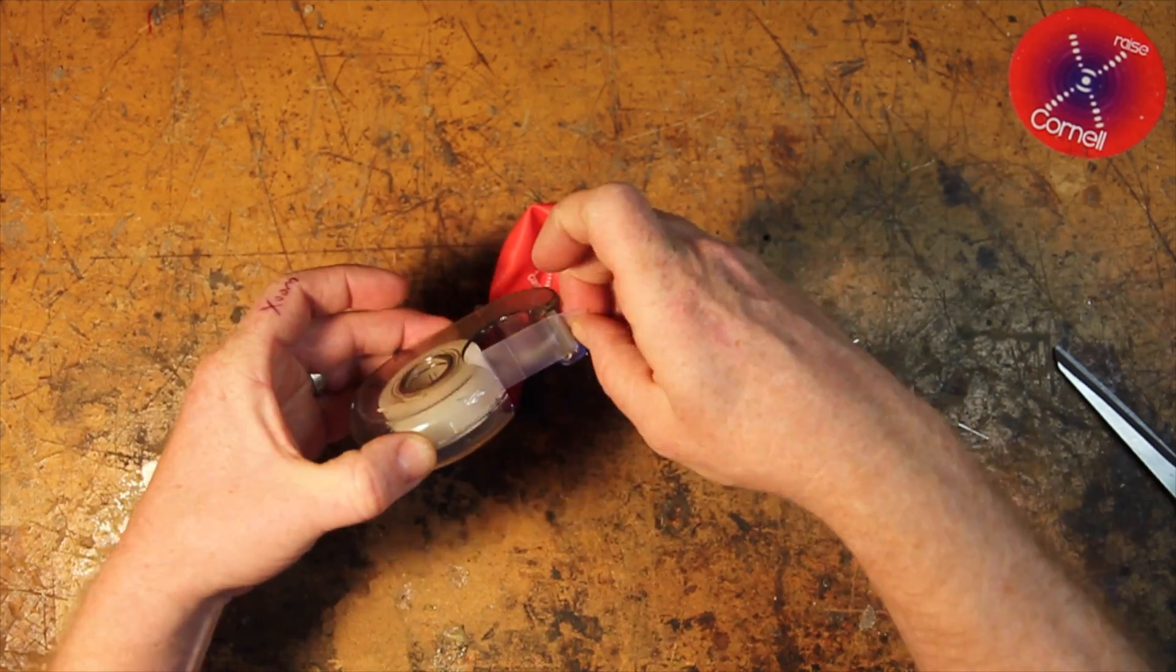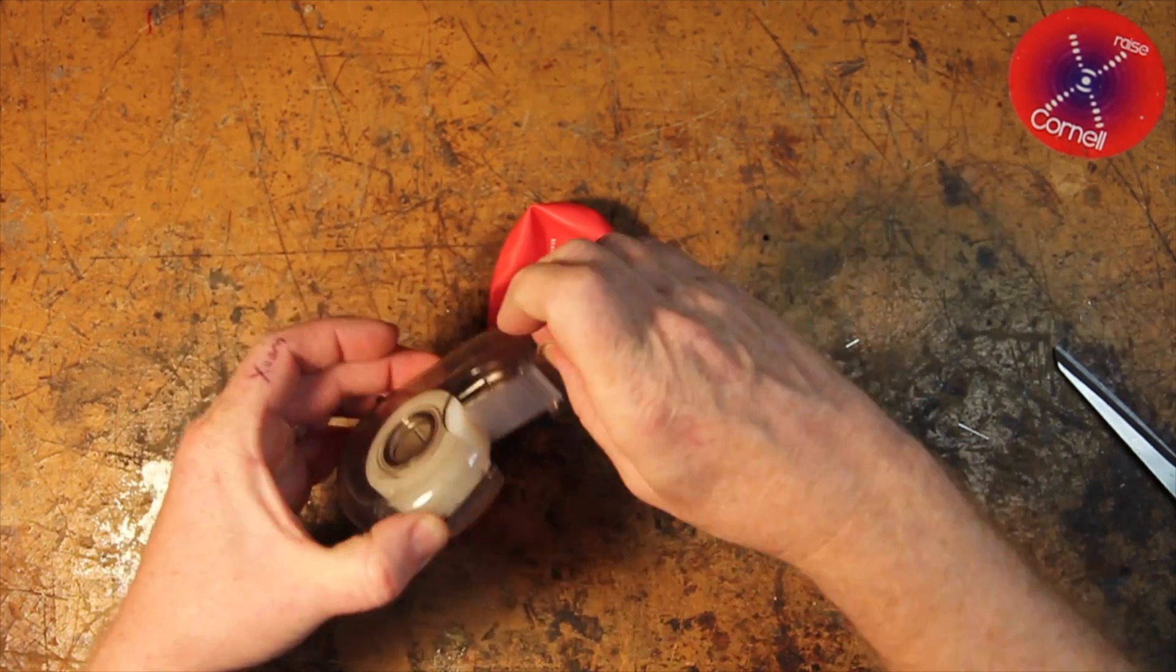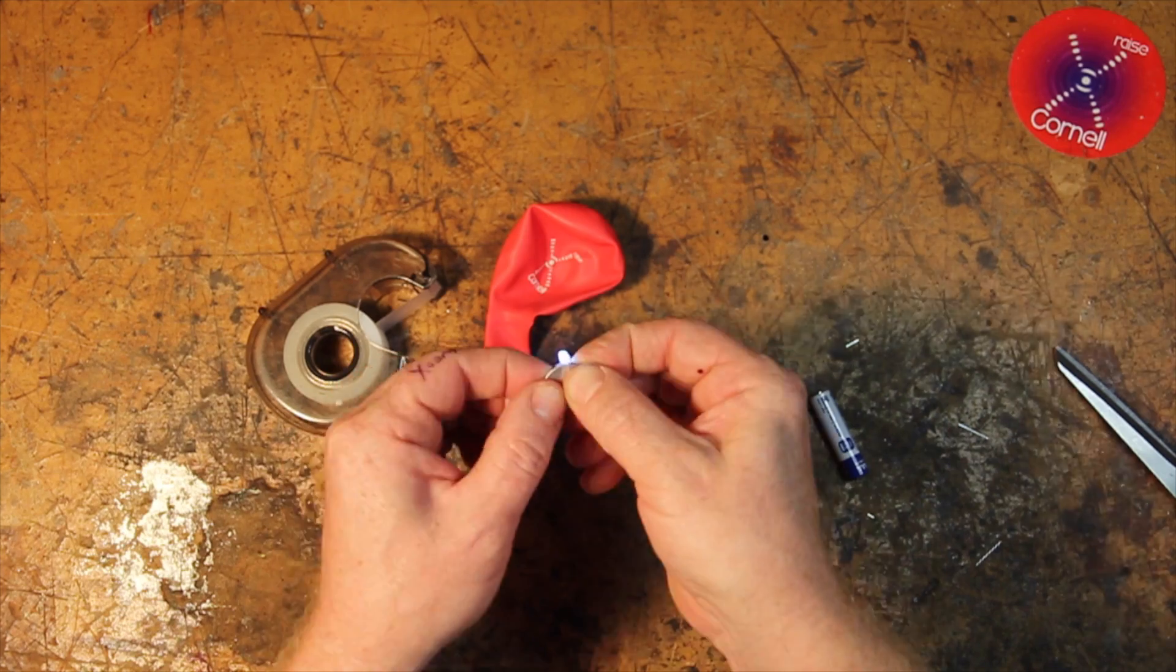So it all stays together, get a piece of tape and place it on each side of your button cell battery.